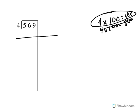So over here on my division problem, I'm going to subtract 100 groups of 4, which is going to be 400. Now 569 subtract 400: 9 minus 0 is 9, 6 minus 0 is 6, and 5 minus 4 is 1, giving me 169.